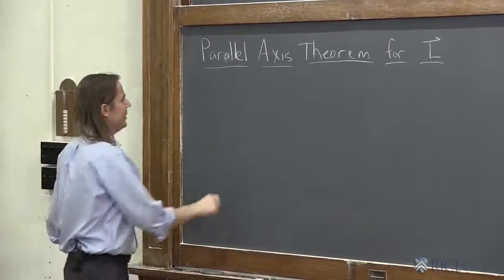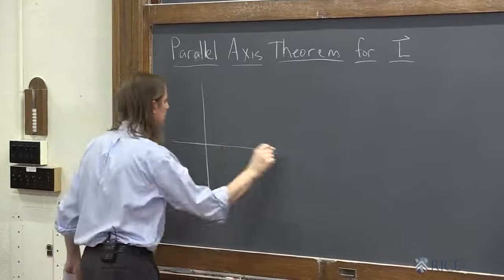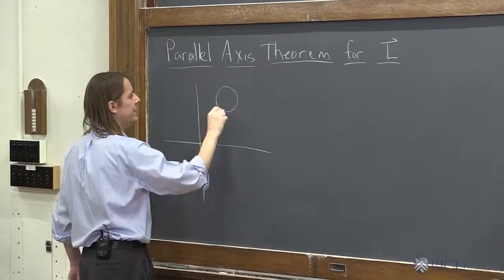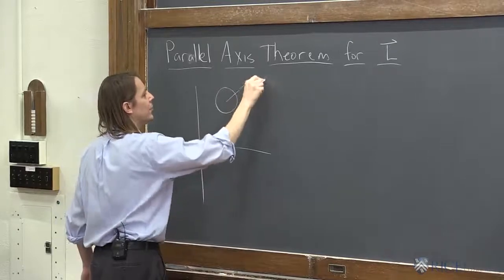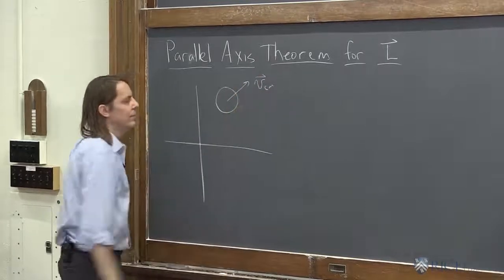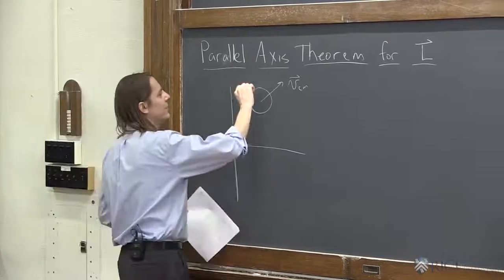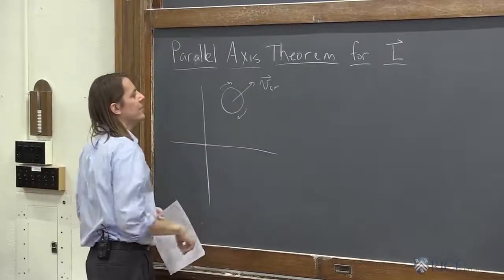So let's think about a problem like this. You've got a coordinate system with an origin here, and you've got a disk, and the center of mass of the disk is just moving up in the plane, something like that, VCM, and the disk is also rotating in this sense, like this.